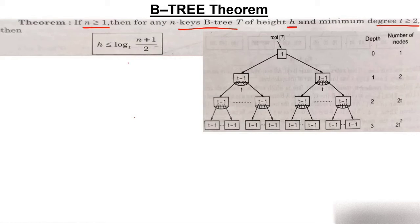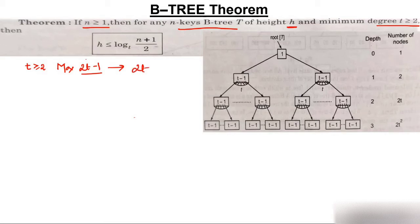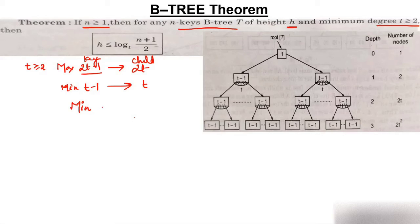I will prove this using the degree method. A node can have a maximum of 2t−1 elements, giving 2t children. The minimum number of elements a node can have is t−1, giving t children. Regarding the root: the root can have only one element minimum; except for the root, all other nodes must have at least t−1 keys.